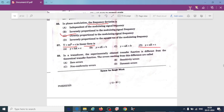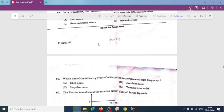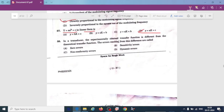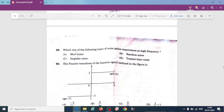Y is equal to Ax to the power b plus c is linear form. So actually when I saw this, option D is correct. In a transducer, the experimentally obtained transfer function is different from the theoretical transfer function. The errors resulting from the difference are called non-conformity errors. Which one of the following types of noise can be important at the high frequency? Transient time noise.